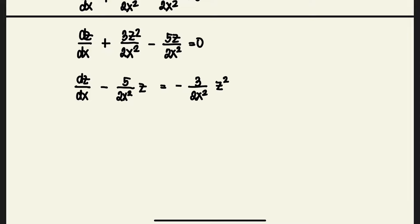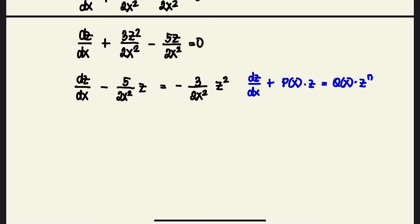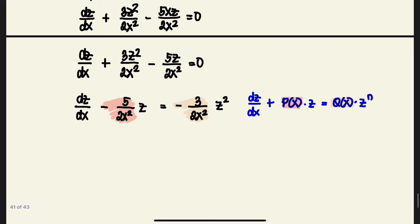Rewriting the DE: dz/dx − (5/(2x))z = −(3/(2x²))z². This matches the Bernoulli DE pattern: dz/dx + P(x)z = Q(x)z^n. Here P(x) = −5/(2x), Q(x) = −3/(2x²), and n = 2.